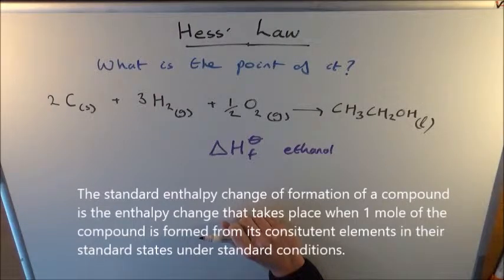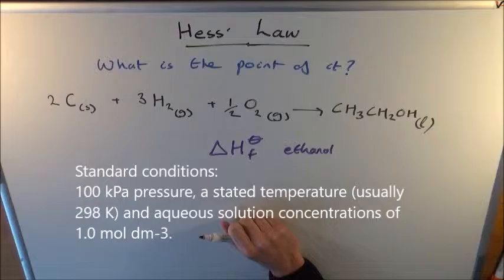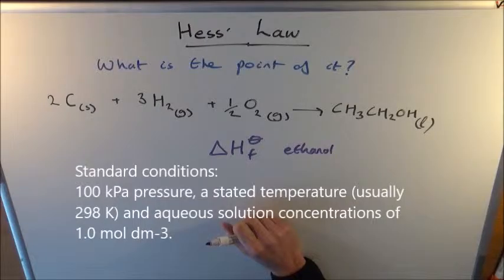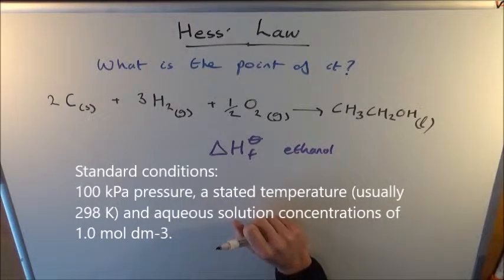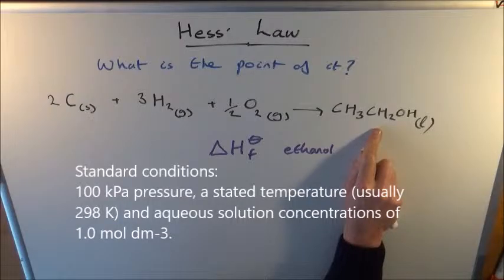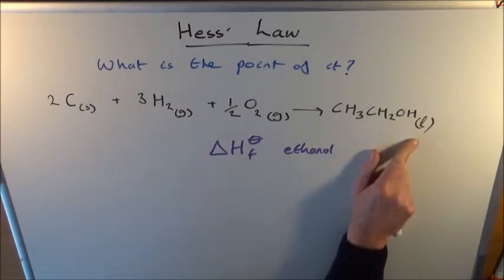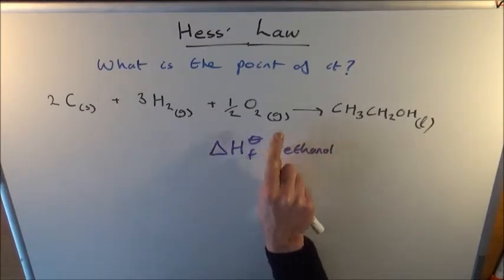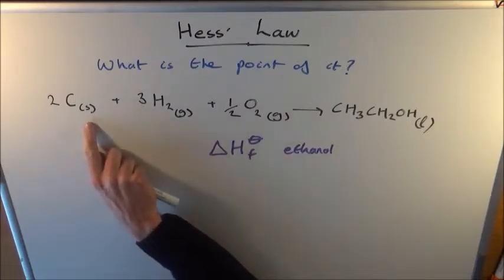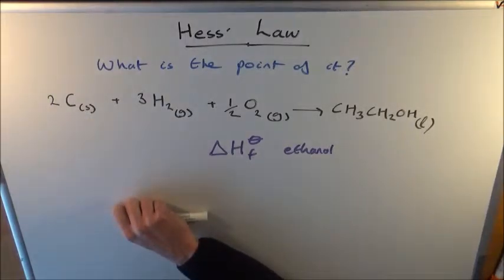Standard state means the physical state that the substance will be in under standard conditions — standard pressure, which is 100 kilopascals or 1 atmosphere, and a standard temperature of typically 298 Kelvin, 25 degrees Celsius. So if you had ethanol in the room now, it would be a liquid. Oxygen is a gas, hydrogen is a gas, and carbon is a solid. Some exam boards expect you to state that the solid form of carbon is graphite — graphite is the standard state rather than diamond.